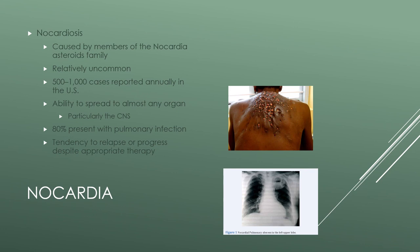Nocardia is regarded as opportunistic; however, one third of infected patients have no immune deficiency whatsoever. It has an incredible ability to spread to almost any organ and has an affinity for the central nervous system. Eighty percent of cases present as invasive pulmonary infections, disseminated infections, or brain abscesses, and 20% present as cellulitis. It can also involve the kidneys, joints, heart, eyes, and bones. Pulmonary infections commonly present with fever, cough, and chest discomfort. If impacting the central nervous system, it can lead to headaches, lethargy, confusion, seizures, or neurological deficits. In rare cases it can infect the skin and skeletal muscle, and immunocompromised individuals are at greatest risk for this cutaneous form of nocardiosis.